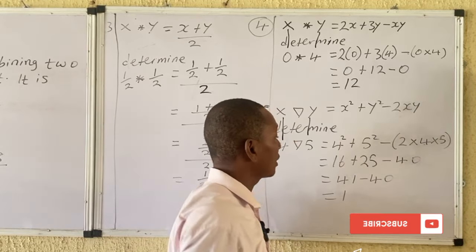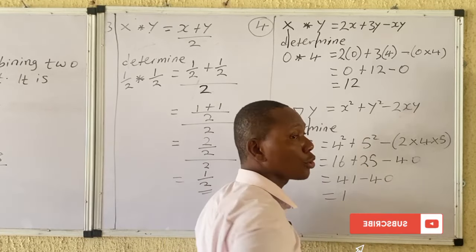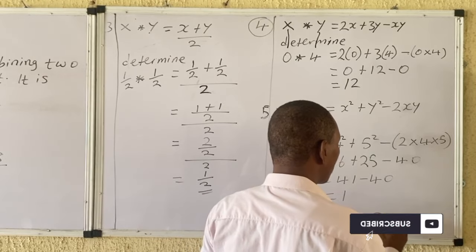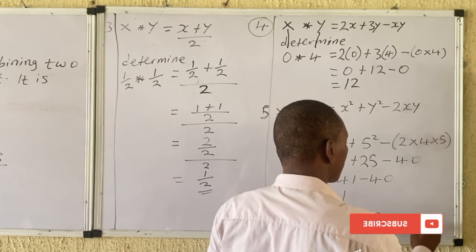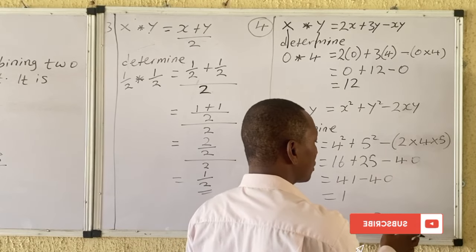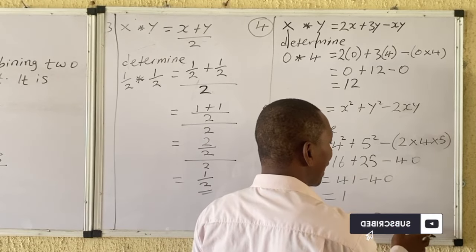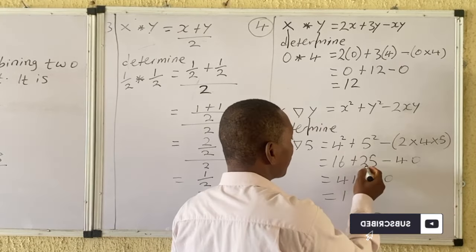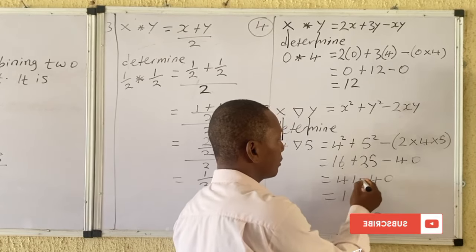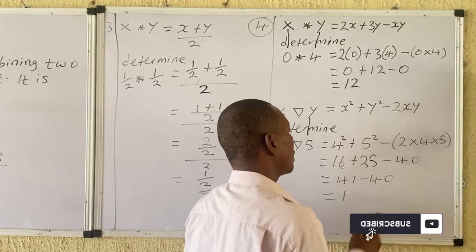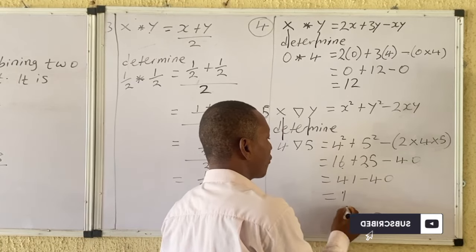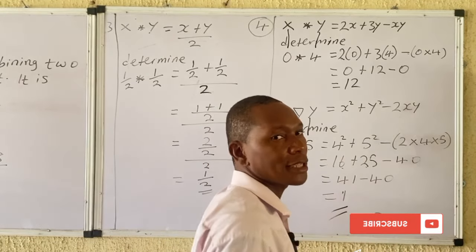Remember BODMAS — Brackets, Order, Division, Multiplication, Addition before Subtraction. So add first: 16 + 25 = 41, then 41 − 40 = 1. The answer is 1.